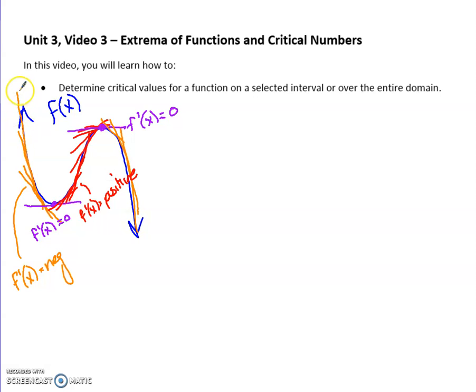So again, negative slope was a decreasing graph, positive slope of my tangent line was increasing. So you can see that we have maxes or mins at these potential maxes and mins at these places where my slope is zero, where I've flattened out.